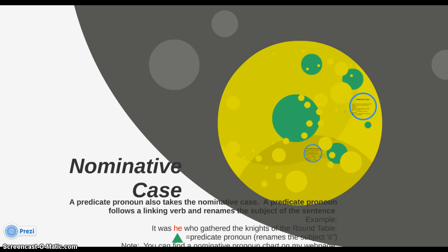A predicate pronoun also takes the nominative case. A predicate pronoun follows a linking verb and it renames the subject of the sentence. For example: "It was he who gathered the knights of the round table." Here, he is a predicate pronoun — it renames our subject it. So when you have a predicate pronoun, you're going to use the nominative case. When you see the nominative case pronouns in the chart, you'll see that he is one of those pronouns.